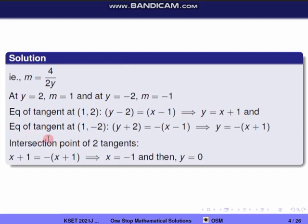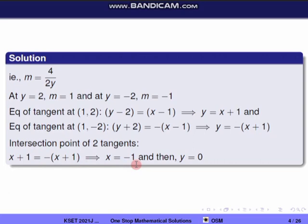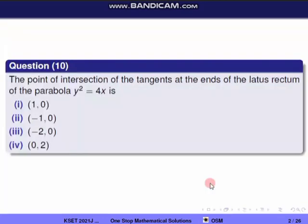The equation of the tangent at point (1, minus 2) is: y plus 2 equal to minus 1 into x minus 1, so y equal to minus x plus 1. Solving the two tangent equations gives x equal to minus 1 and y equal to 0. So the intersection point is (minus 1, 0).